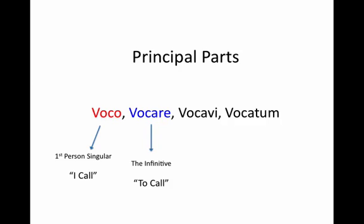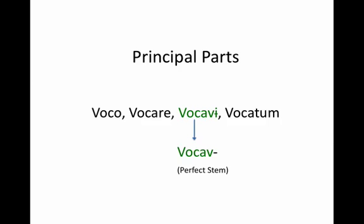We haven't really worked with any of the other principal parts. Today we're going to finally use that third principal part, wokawi. This is where we get our stem for the perfect tense. What we're going to do is take that third principal part, drop off our 'i,' and that will give us our perfect stem — in this case, wokaw.